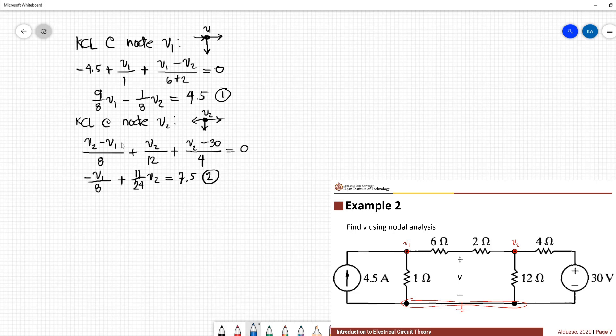So now we have equation 1 and equation 2. So by substitution, looking at the values of V1 and V2, V1 is 6 volts, V2 is 18 volts.